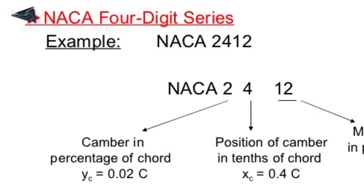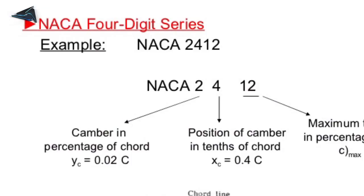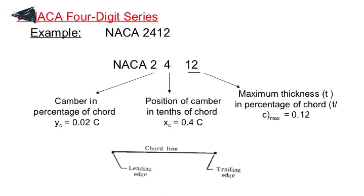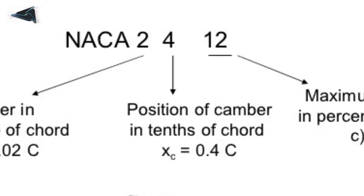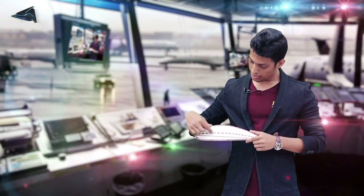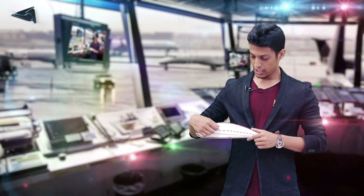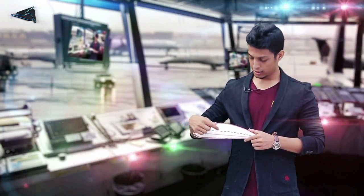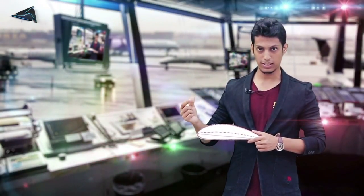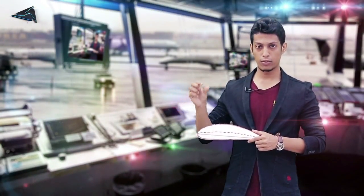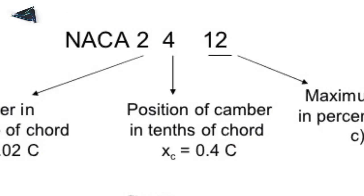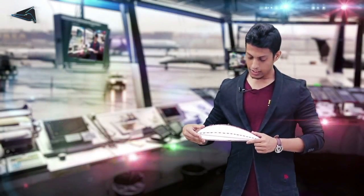For example, NACA 2412 — in this 4-digit code: the first digit (2) gives the maximum camber as a percentage of chord; the second digit (4) gives the location of maximum camber in tenths of chord — so maximum camber is at 40% of chord; and the last two digits (12) give the maximum thickness as a percentage of chord.